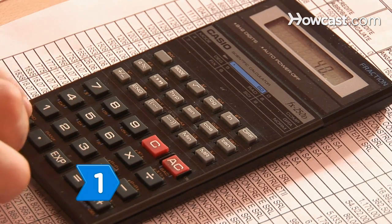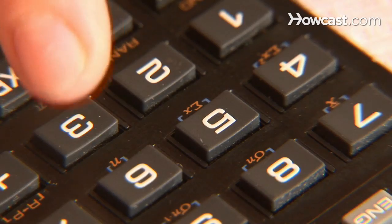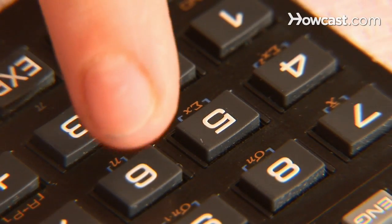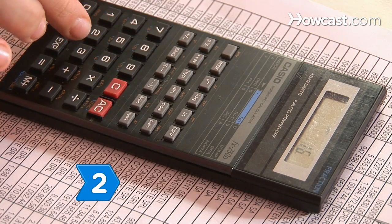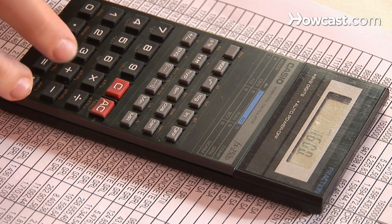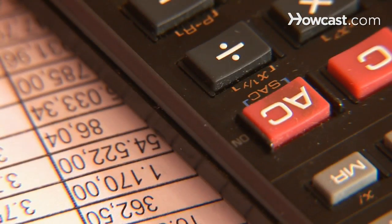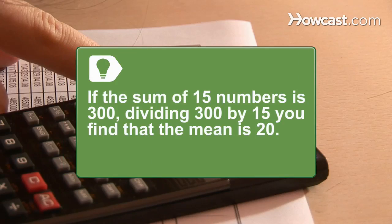Step 1: Add all of the numbers together to find the sum. Step 2: Divide the sum of the data by the number of values in the set to find the mean, or average. For example, if the sum of 15 numbers is 300, dividing 300 by 15 you find that the mean is 20.